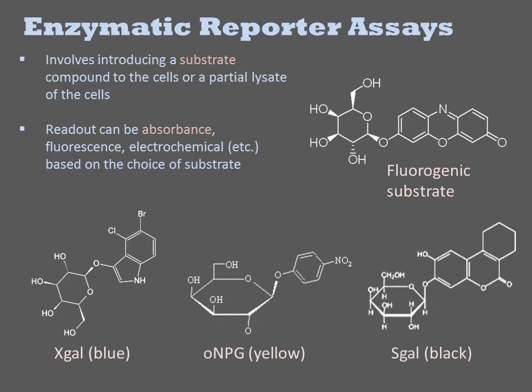Many of these chromogenic and fluorogenic substrates are cell permeable, and there are additional chemical modifications that can render them cell permeable when they are not. Thus, you often can perform these assays directly on intact cells. Alternatively, they can be performed in a partial lysate of the cells.